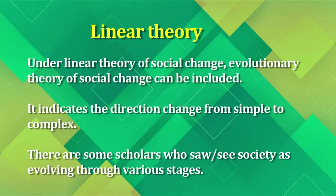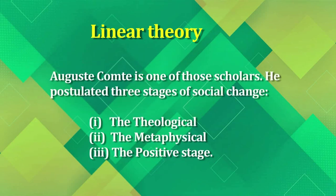Under the linear theory of social change, the evolutionary theory can be included. It indicates the direction of social change from a simple to a complex state. Some scholars saw society as evolving through various stages. Auguste Comte is one such scholar who believed in the evolutionary theory and postulated three stages of social change: the theological stage, the metaphysical stage, and the positive stage.